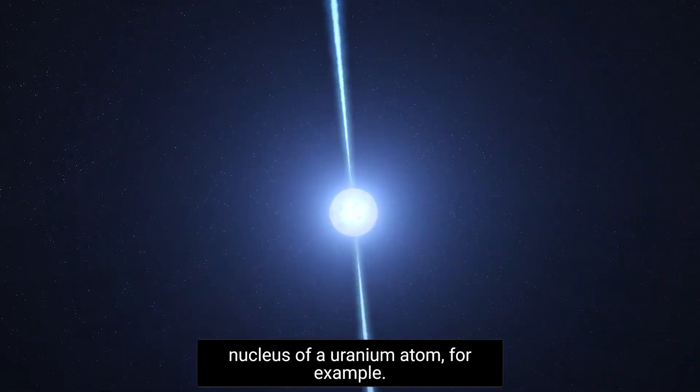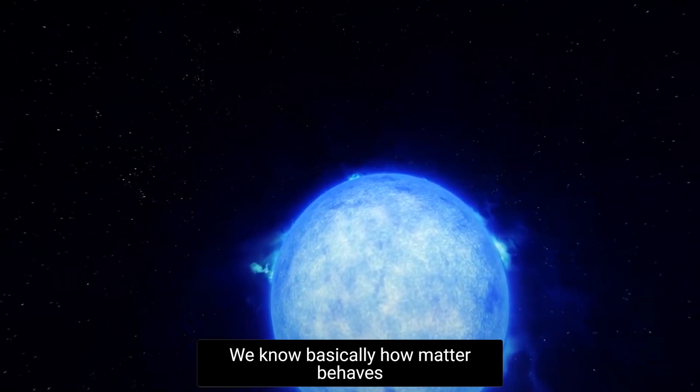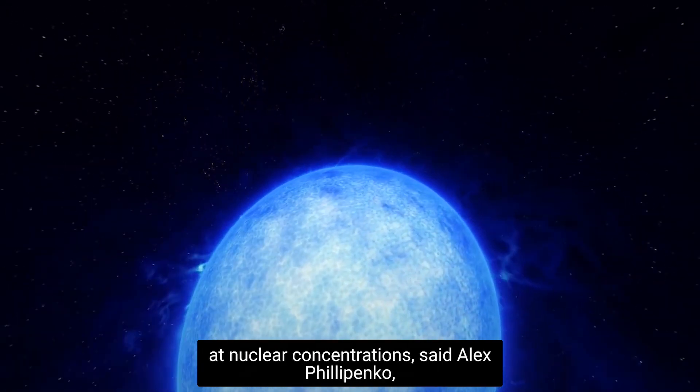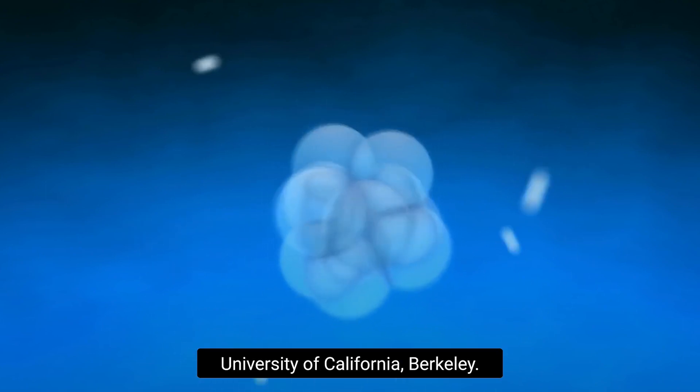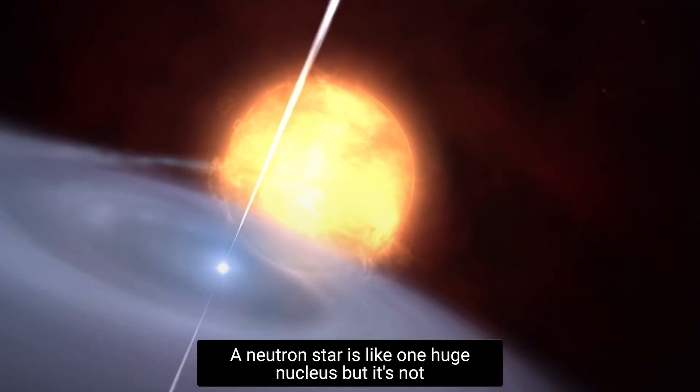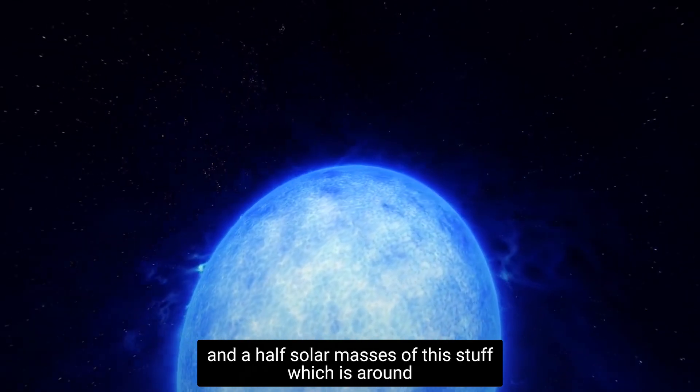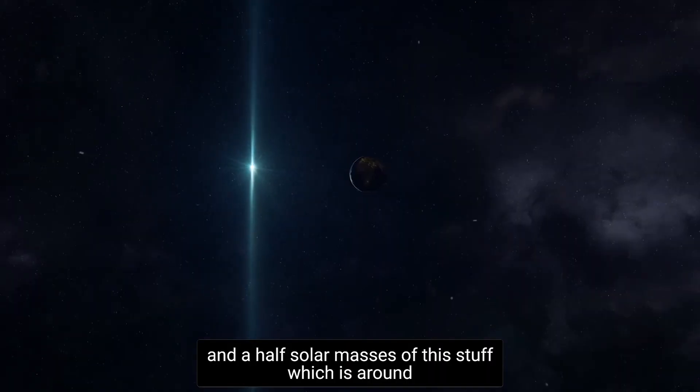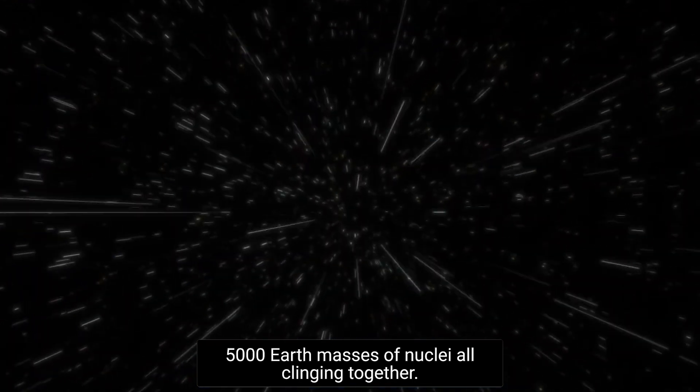In the nucleus of a uranium atom, for example, we know basically how matter behaves at nuclear concentrations, said Alex Filippenko, distinguished professor of astronomy at the University of California Berkeley. A neutron star is like one huge nucleus, but it's not at all apparent how they would behave when you have one and a half solar masses of this stuff, which is around 500,000 Earth masses of nuclei all clinging together.